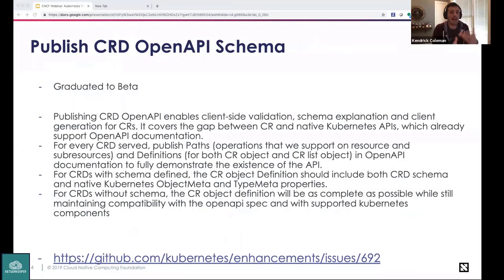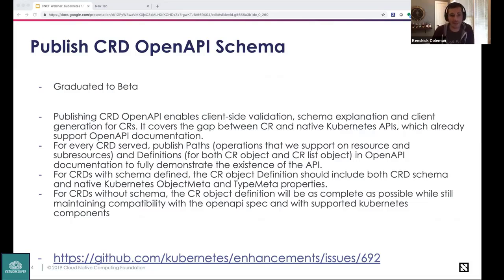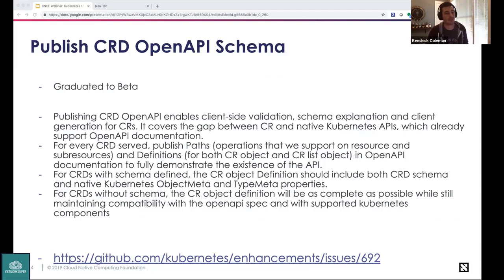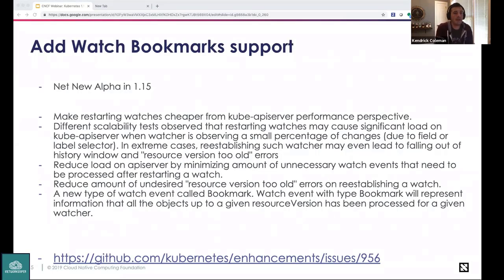The CRD OpenAPI schema enhancement uses OpenAPI v3 to enable server-side validation for custom resources. This validation format is compatible with generating OpenAPI documentation for custom resources. It can also be used by clients like kubectl to perform client-side validation when using kubectl create or kubectl apply, and supports client code generation.